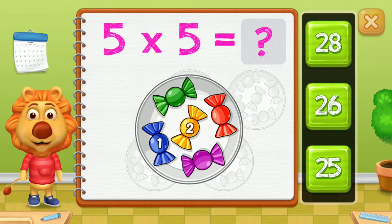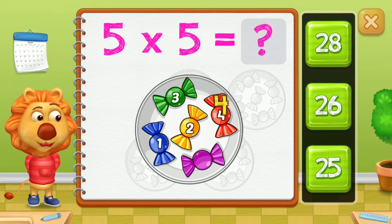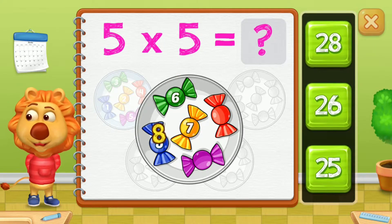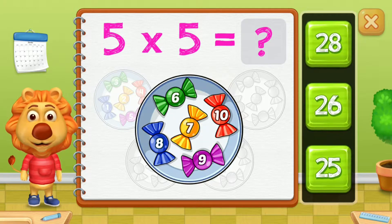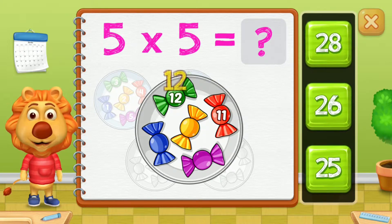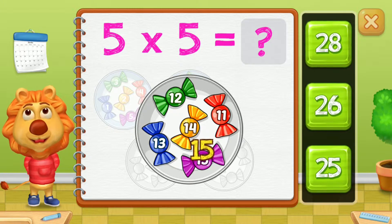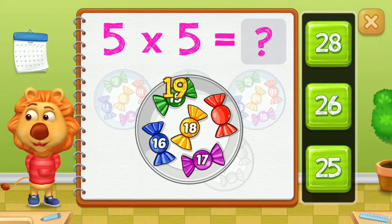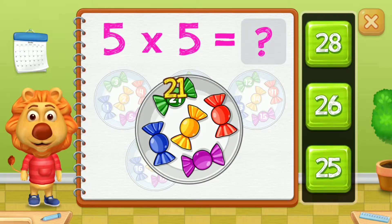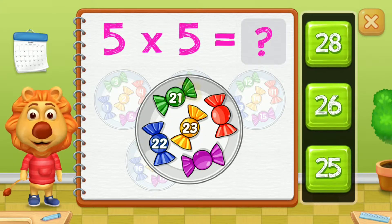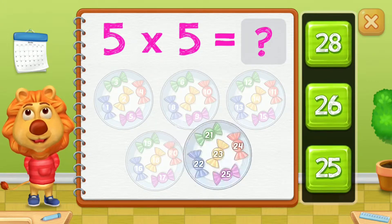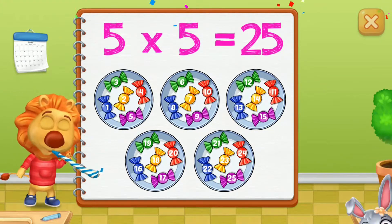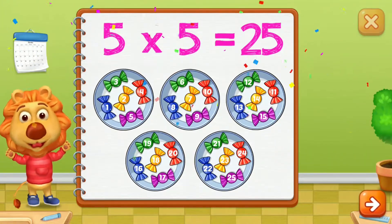One, two, three, four, five, six, seven, eight, nine, ten, eleven, twelve, thirteen, fourteen, fifteen, sixteen, seventeen, eighteen, nineteen, twenty, twenty-one, twenty-two, twenty-three, twenty-four, twenty-five! Five groups of five equals twenty-five!